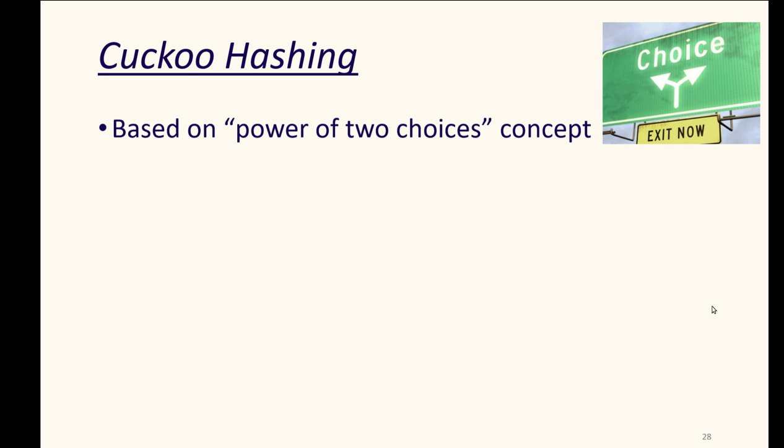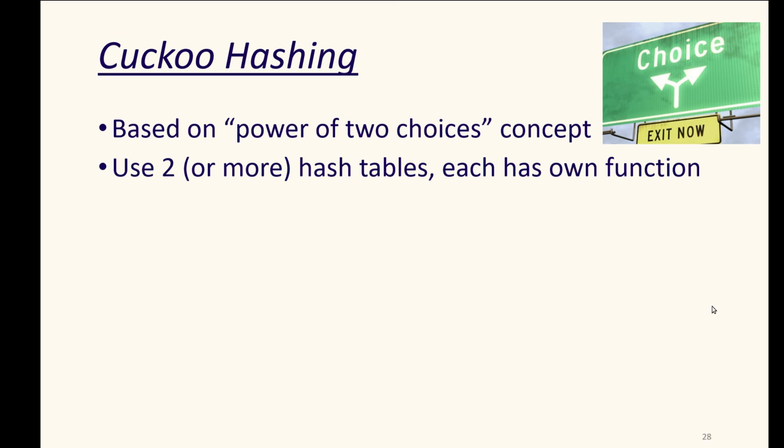The other approach that we'll look at for collision handling is cuckoo hashing. It's based on this idea that having two possible choices is actually very powerful when we're handling a problem like hash collision, or any problem where we might have a limitation on us. So we use multiple hash tables, at least two, and each one has its own hash function.